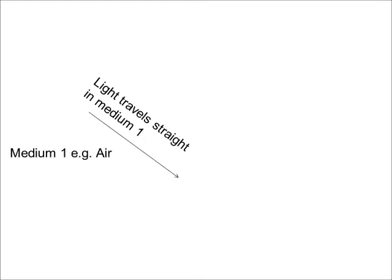We call the substance that light travels through a medium. When the light goes from one medium to another medium, then there are three possible things that can happen.